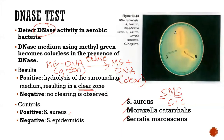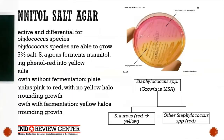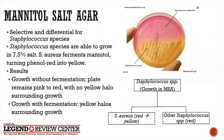If the question describes a gram-negative coccus that is DNase-positive, that's Moraxella. Remember: SMS. Another related test for Staphylococcus is Mannitol Salt Agar, which is a selective and differential culture medium for Staphylococcus species.